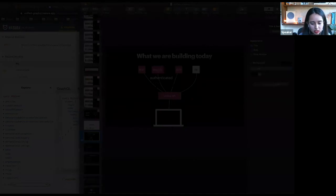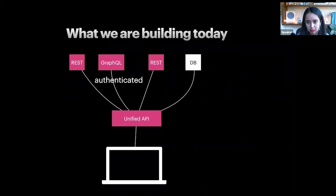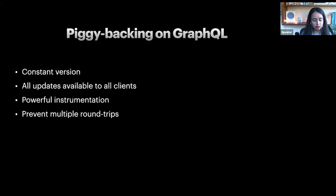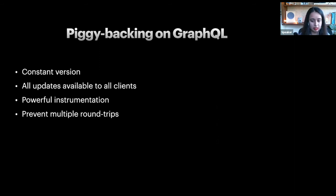These endpoints can be authenticated or unauthenticated, and Hasura doesn't really care about that. To wrap up, the advantages of having a unified API: it provides an abstraction layer where you can unify how each request is made, and you don't need to worry about passing parameters to all downstream APIs — the platform does it for you. There is one API that the client needs to integrate with. And because we're using GraphQL, there is a constant version — once the client has integrated, they get all new updates right away without reintegrating. As an API developer, GraphQL gives you powerful instrumentation on fields, so you know which fields are being called how many times.